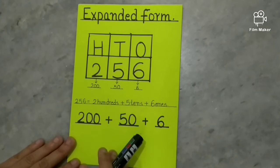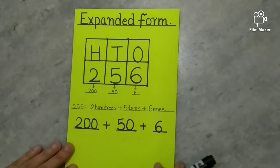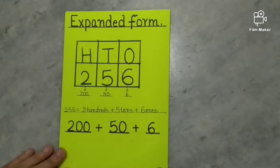Which means 200 plus 50 plus 6. 200 plus 50 plus 6 is expanded form of 256.